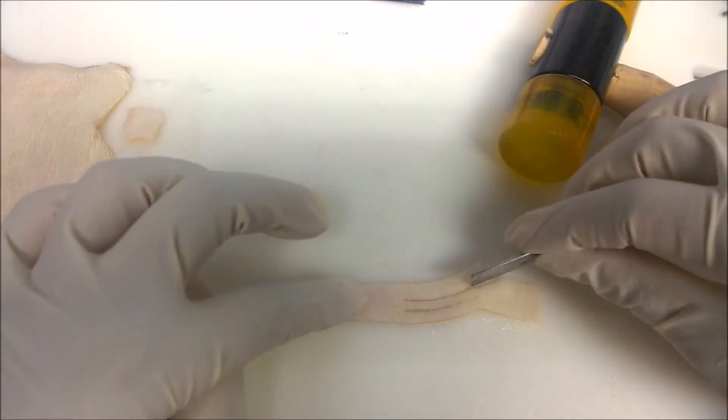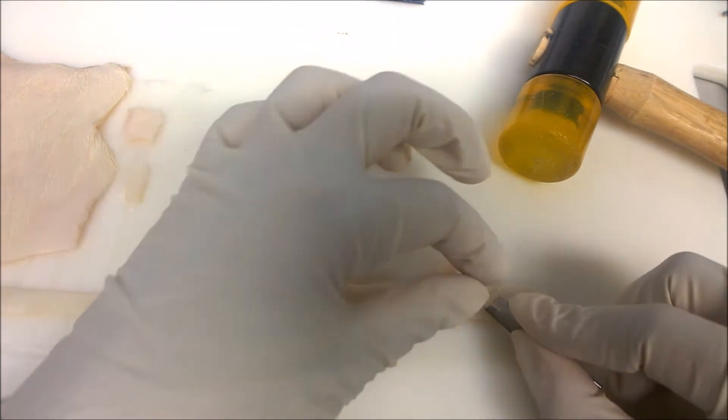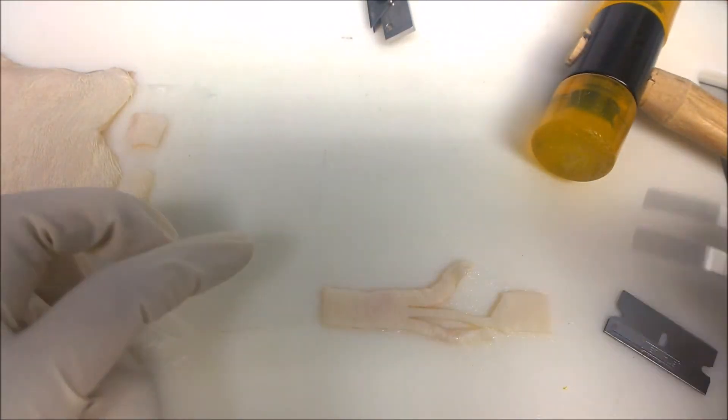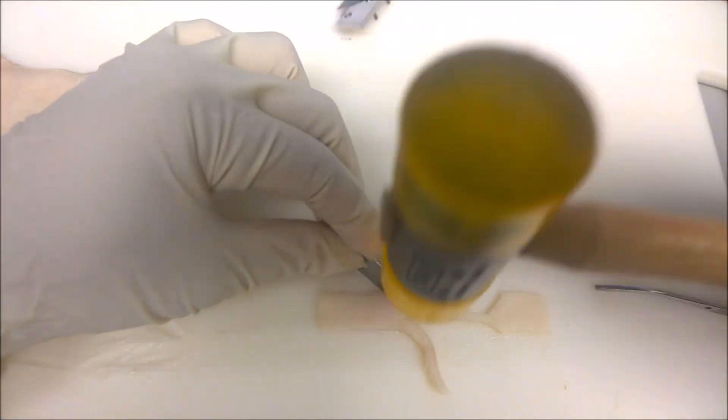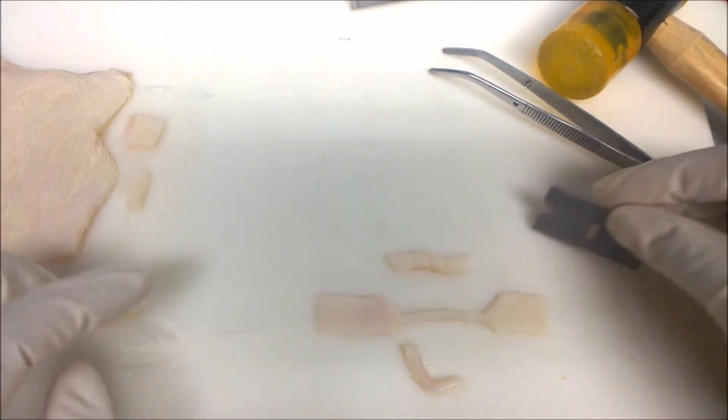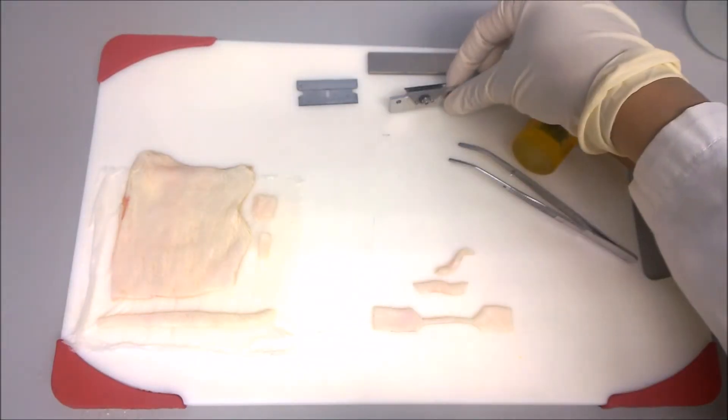Now position the razor blade to obtain a dog bone shape and then slightly tap the razor blade with the mallet to facilitate incision. Repeat this operation for the four diagonal cuts.